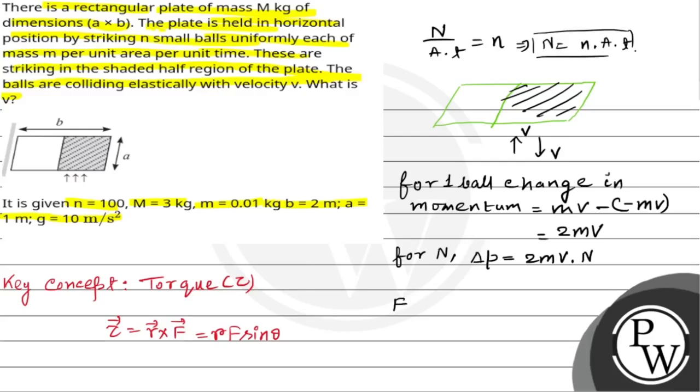Now the force exerted by the capital N number of balls on the plate is del p by t, which is equal to 2mv into N by t. So N by t equals to, we can say from this equation, n into A, right? So this is the amount of force exerted by the balls on the plate.